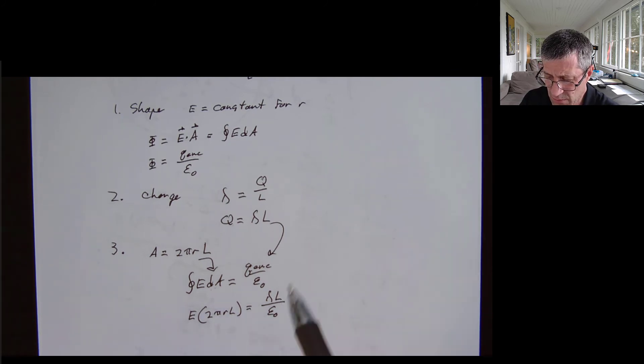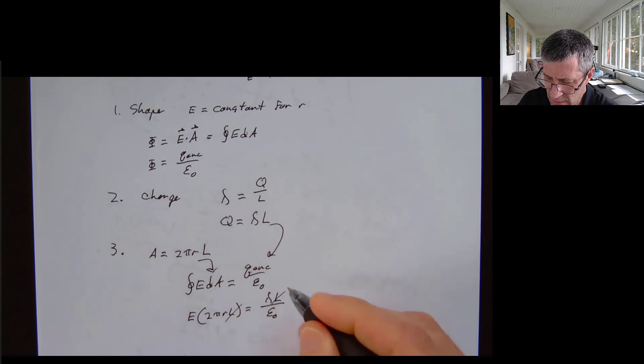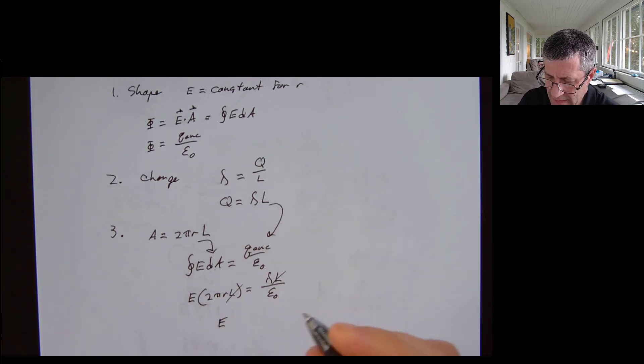And remember what I'm trying to get to? I'm trying to get to my electrical field. So I have L is going to cancel and I'll be left with my E is going to be equal to lambda over two pi R epsilon naught.